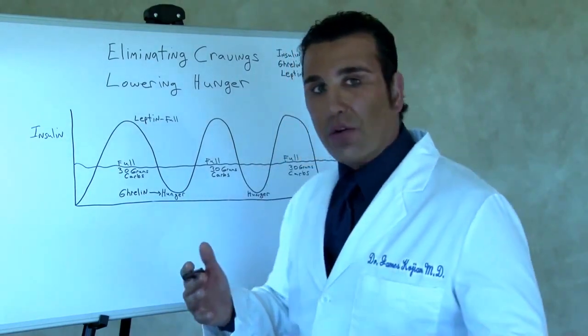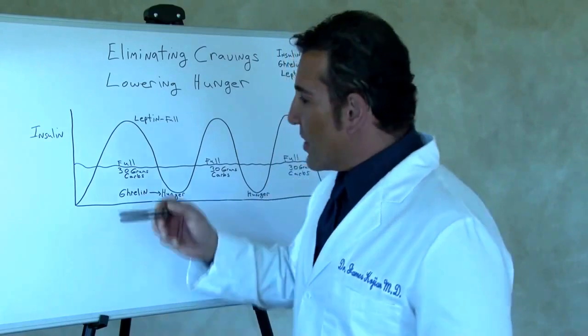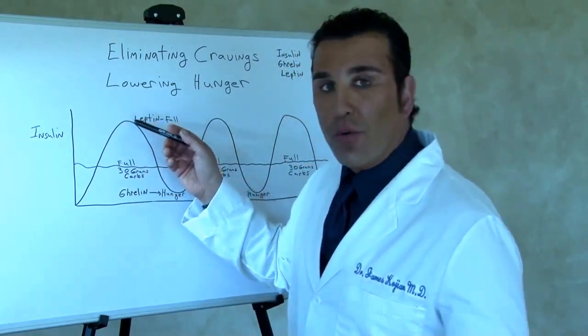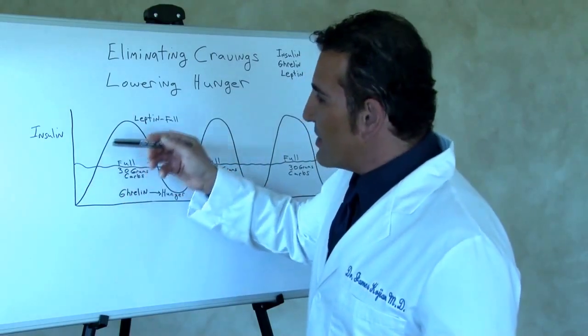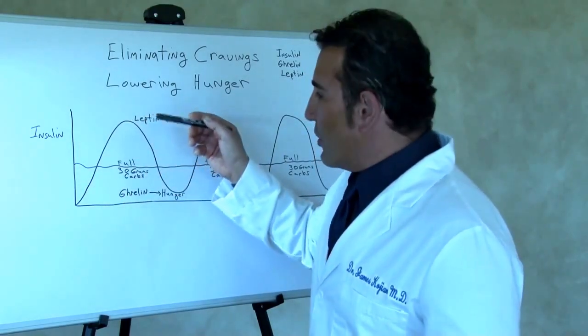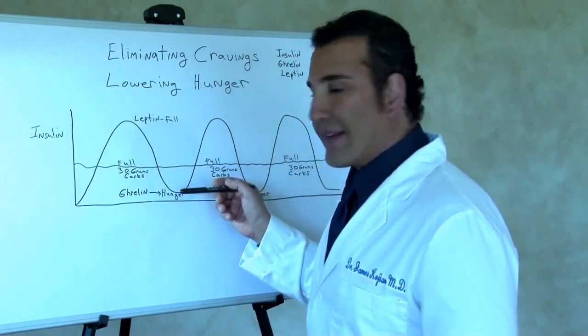Then two, three hours after you eat breakfast, your insulin level, because there's no more food in the stomach, starts coming down. And the higher the insulin level went up, the lower the insulin level goes back down.